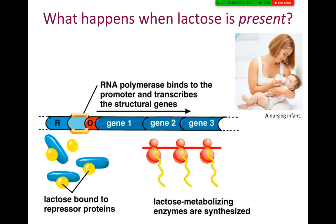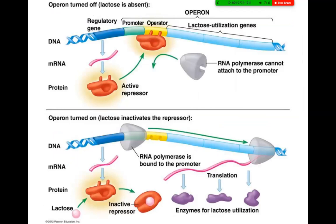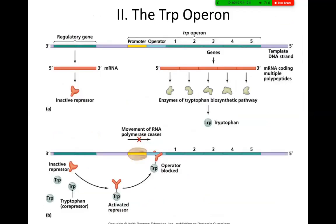What about other products that are not enzyme-based, but instead are protein molecules? The trp operon has a regulatory gene upstream, followed by a promoter region and an operator region, and then the structural genes used for coding the production of an amino acid called tryptophan. How does your gene know when it needs to make more tryptophan and when it should stop?